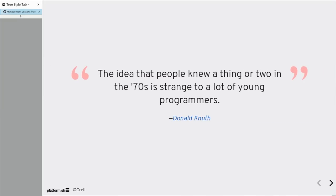The idea that people knew a thing or two in the 70s is kind of strange to a lot of young programmers. From Donald Knuth, author of The Art of Computer Programming and considered the father of analysis of algorithms. What can we learn from this? Thank you.